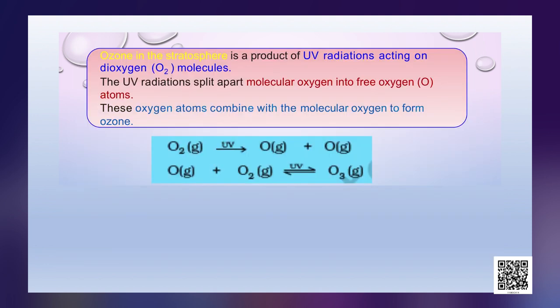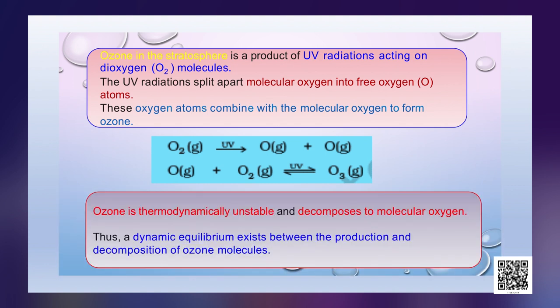Ozone in the stratosphere is a product of UV radiations acting on oxygen molecules. The UV radiations split apart molecular oxygen into free oxygen atoms, which then combine with molecular oxygen to form ozone. Ozone is thermodynamically unstable and decomposes to molecular oxygen. Thus, a dynamic equilibrium exists between the production and decomposition of ozone molecules.